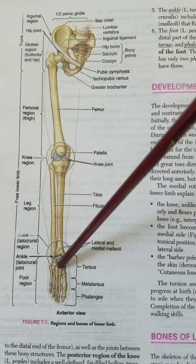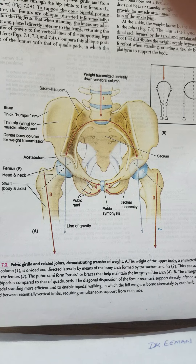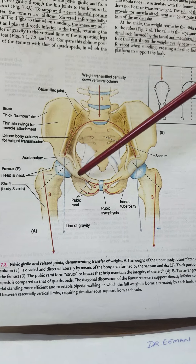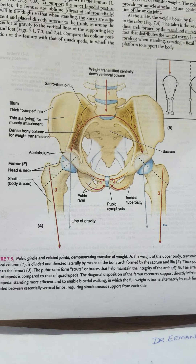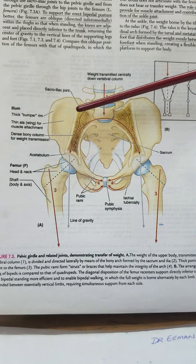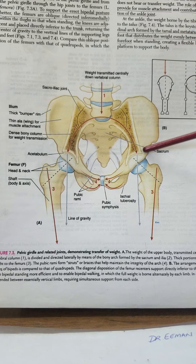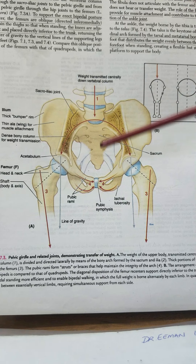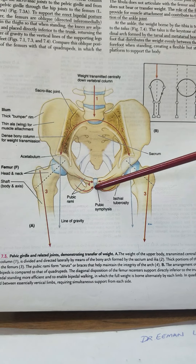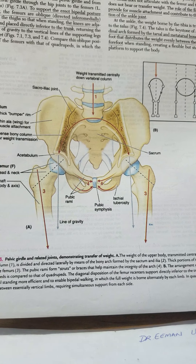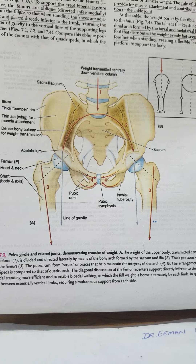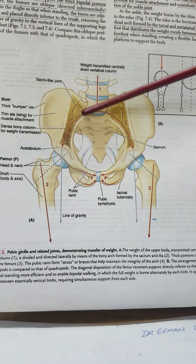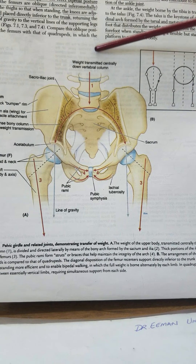After the ankle, we have the last region of the lower limb: the foot. The pelvic girdle is a bony ring composed of the sacrum and the two hip bones on either side. These two hip bones are connected posteriorly to the sacrum and anteriorly to each other via the pubic symphysis.